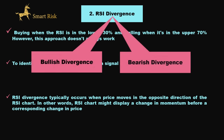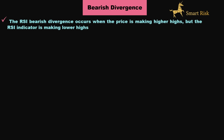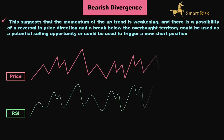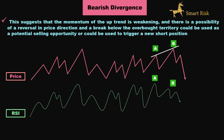Let's start with the bearish divergence. The RSI bearish divergence occurs when the price is making higher highs, but the RSI indicator is making lower highs. This suggests that the momentum of the uptrend is weakening, and there's a possibility of a reversal in price direction. A break below the overbought territory could be used as a potential selling opportunity or could trigger a new short position. Now look at points A and B — if we draw a line between them, it is obvious that price is making higher highs. Now look at the corresponding A and B points on the RSI chart. If we draw a line through A and B, we would see the RSI is making lower highs. This indicates a bearish divergence signal, suggesting that the momentum of the upward trend is weakening and there's a potential for a reversal in price direction.